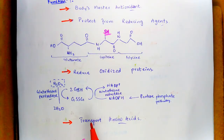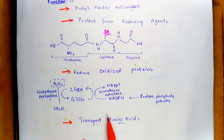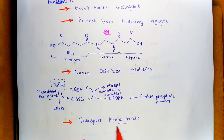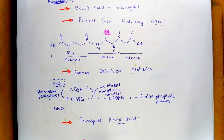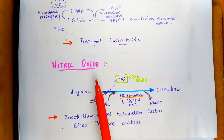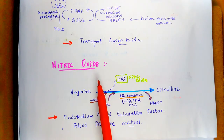Another important function of glutathione is that it is also involved in the transport of amino acids across the cell membrane.